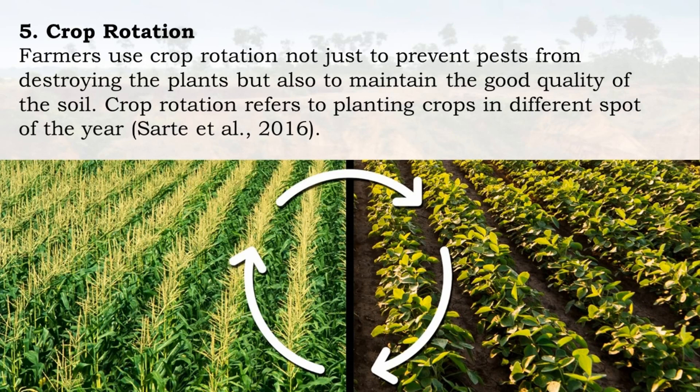5. Crop Rotation: Farmers use crop rotation not just to prevent pests from destroying the plants but also to maintain the good quality of the soil. Crop rotation refers to planting crops in different spots each year.